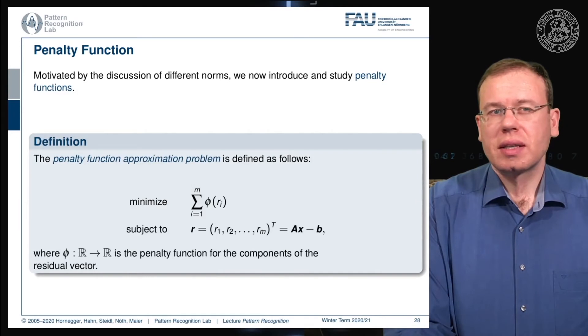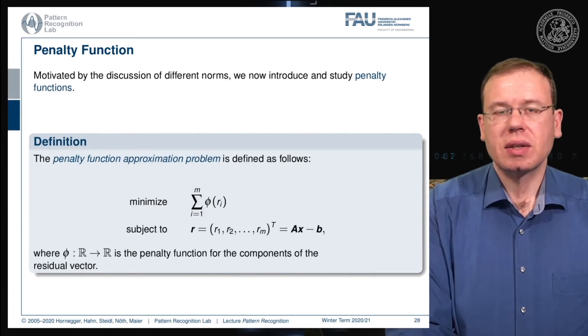Let's look into the so-called penalty functions. This is motivated by the discussion of the different norms, and we can use that to express certain ways of constraining our regularization. You introduce some function phi that is applied to the residual, and then you sum up over all of the residuals after applying the phi. Again, you have this constraint that the solutions should follow the data observation, so Ax minus b.